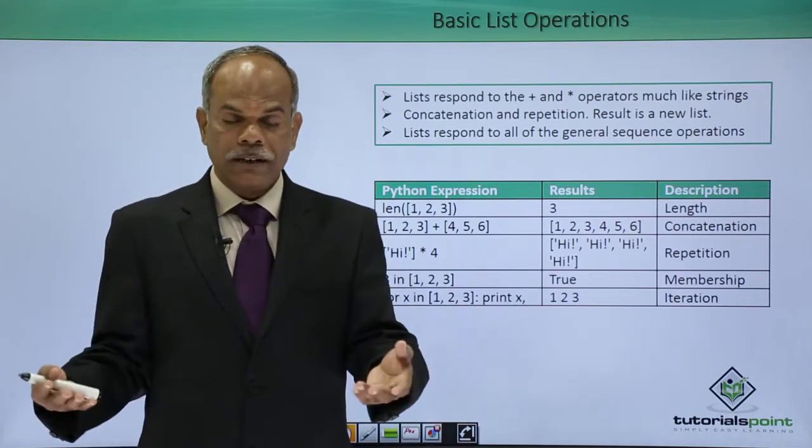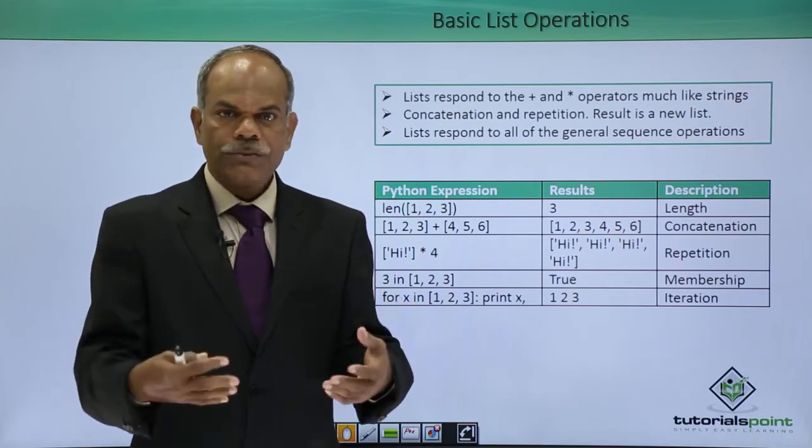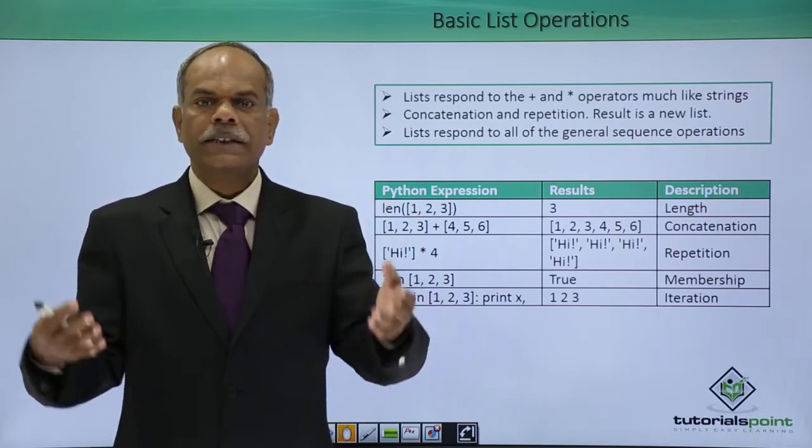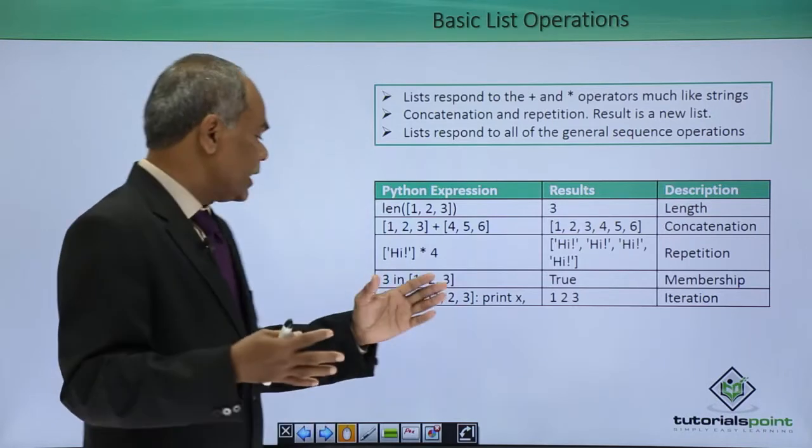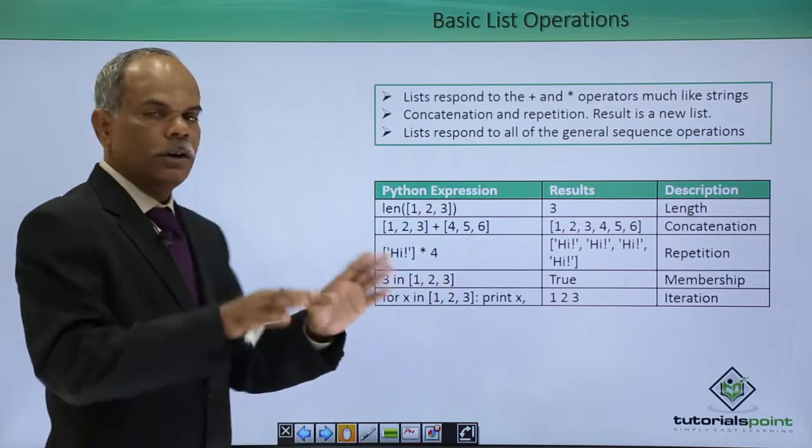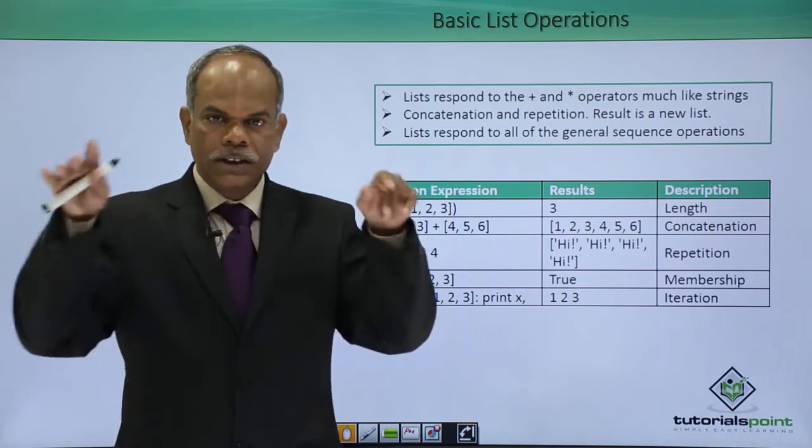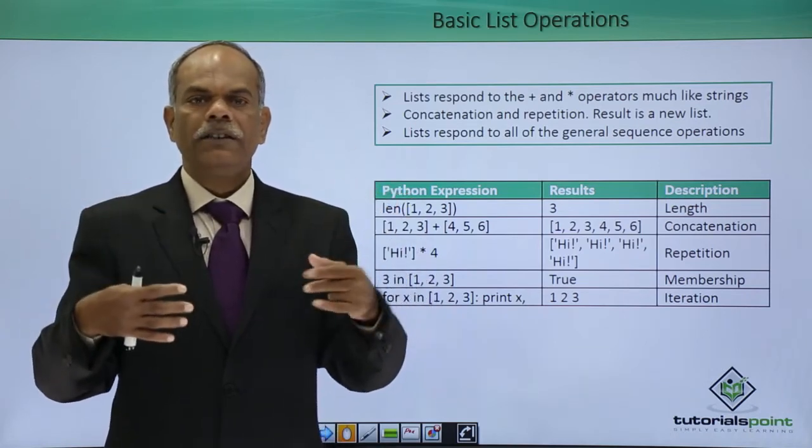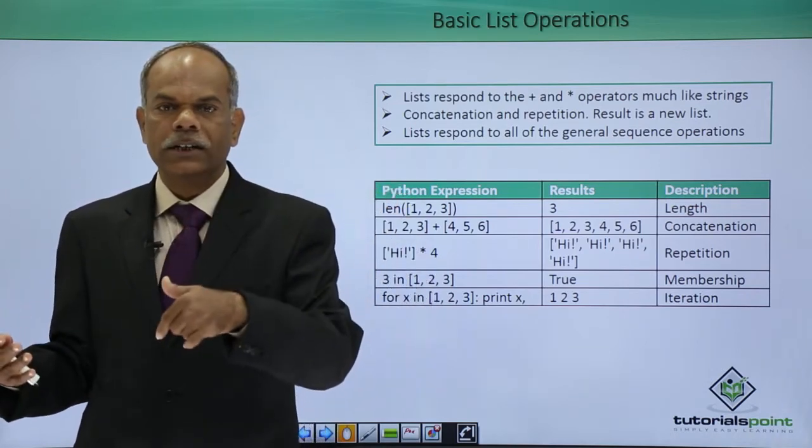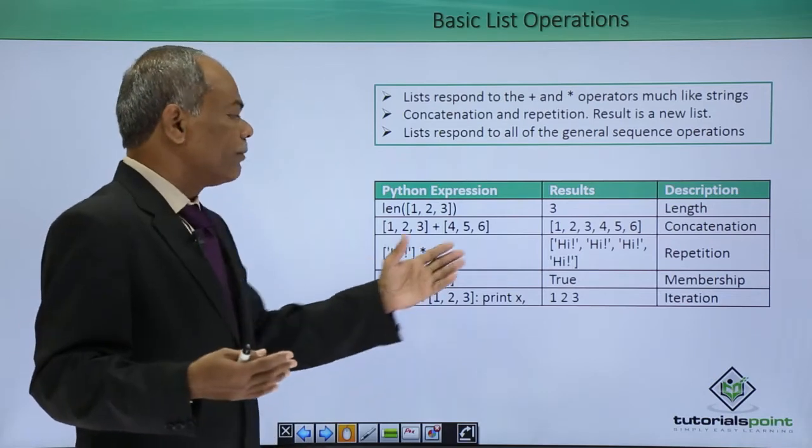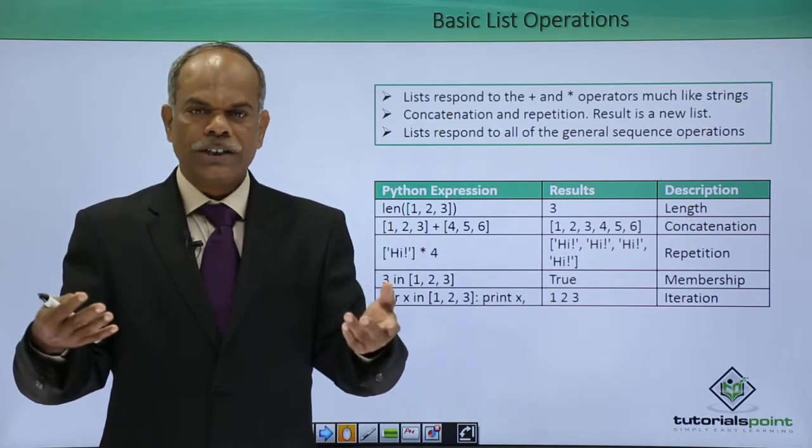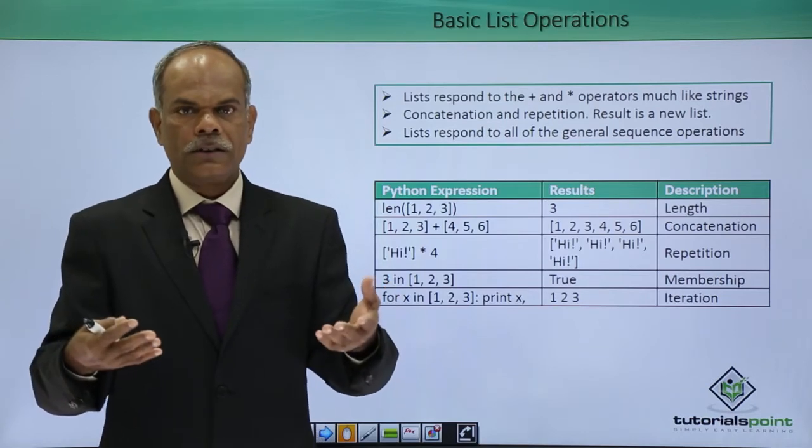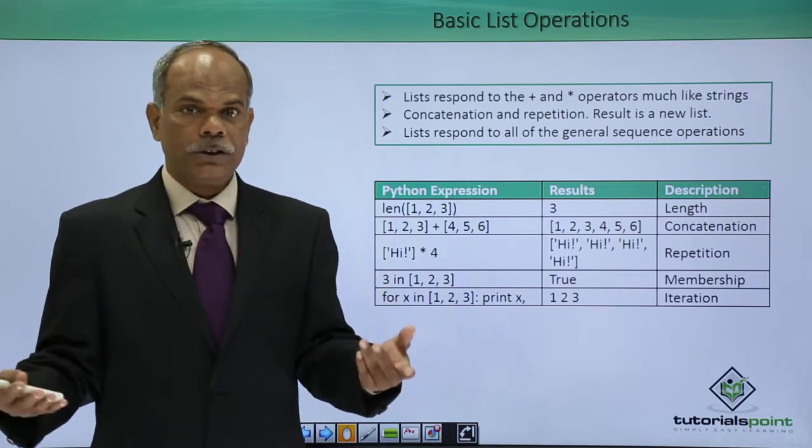You can use a membership operator to test whether a particular element is present in the list or collection of objects in the list or not. In this case, I am saying 3 in [1, 2, 3]. 1, 2, 3 is a list. I want to verify whether 3 is really present inside it or not. The result will be true because 3 is indeed present. On the other hand, you can also test the value of not in operation also.